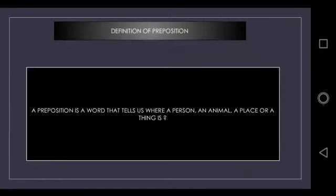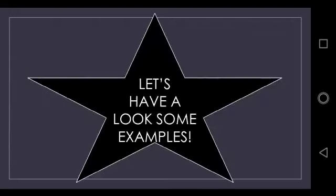Preposition indicates where a thing, a place, a person or an animal is. Let's have a look at some examples.